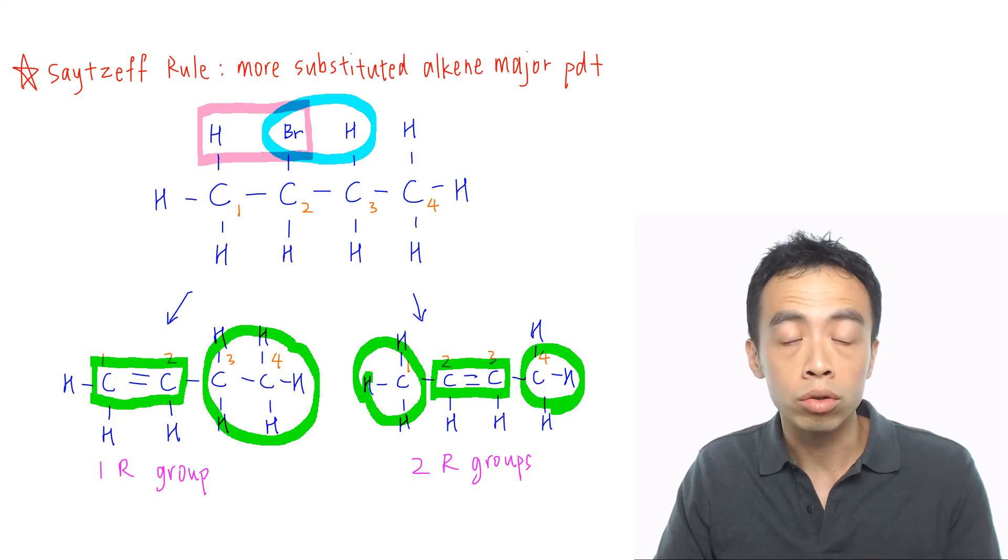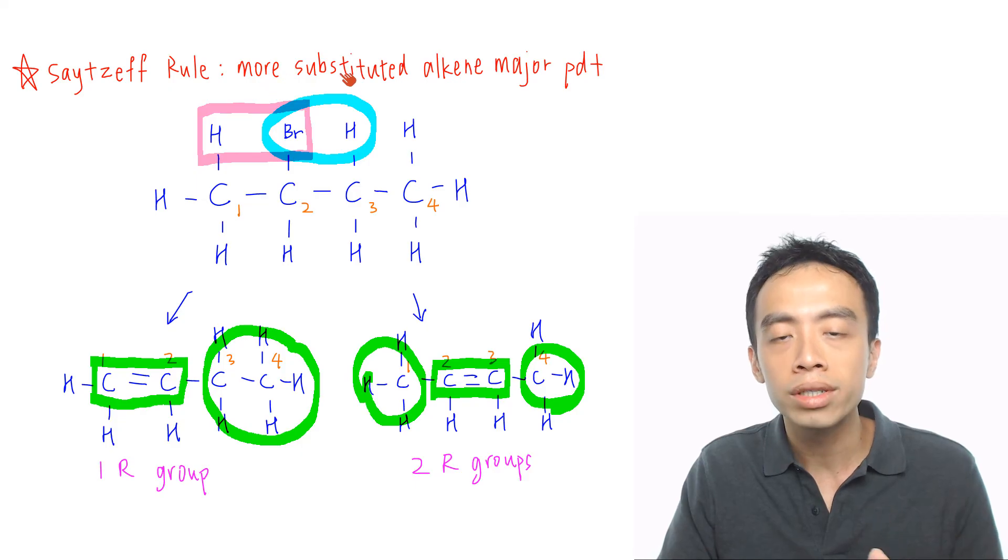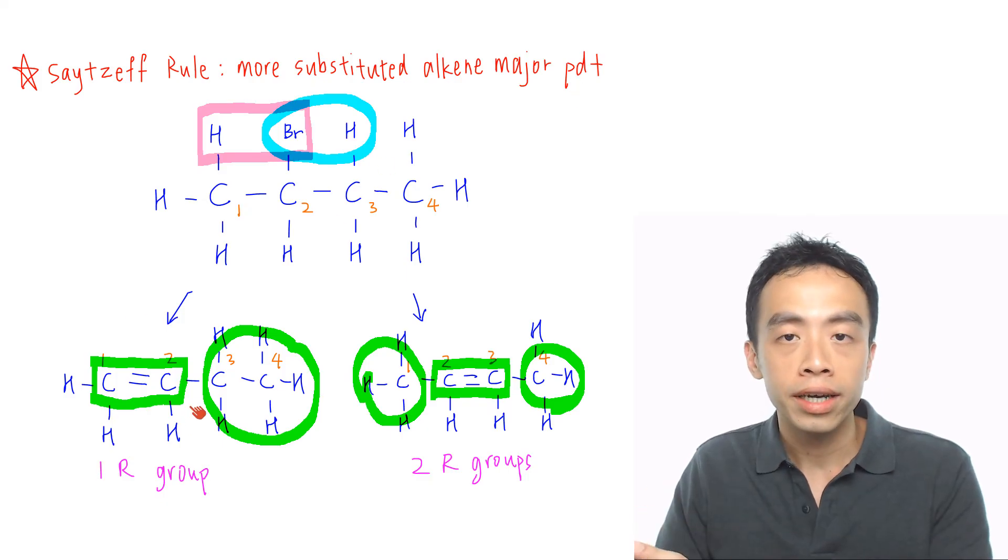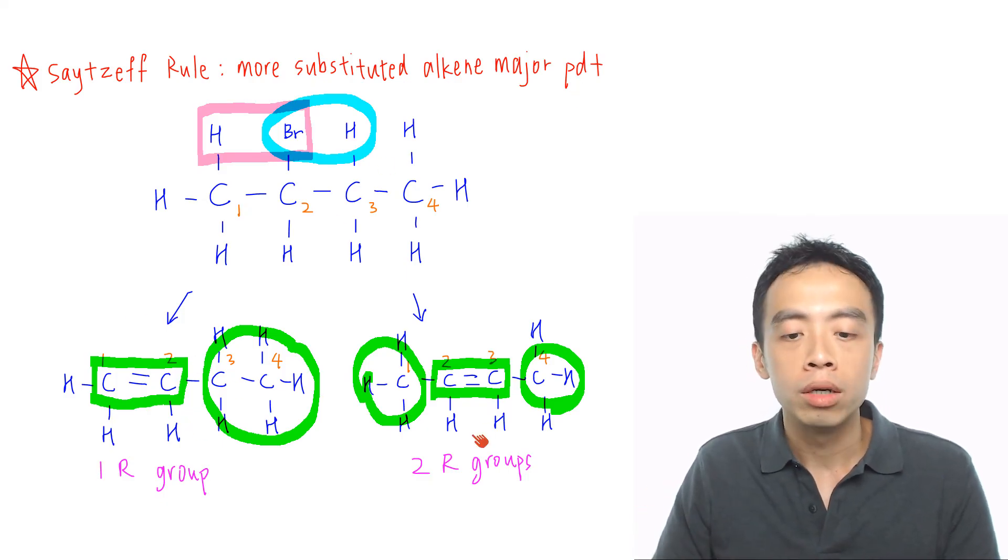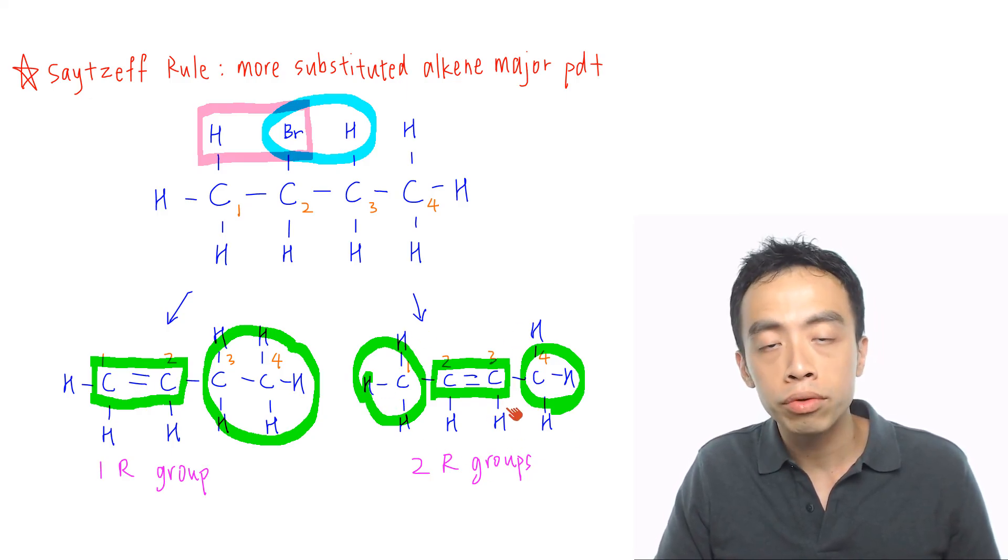So if I compare the two, again back to my Saytzeff rule, Saytzeff rule says that more substituted alkene is my major product. So the one on the left-hand side has only one R group. The one on the right-hand side, we have two R groups. So the compound on my right is more substituted, so this will be my major product.